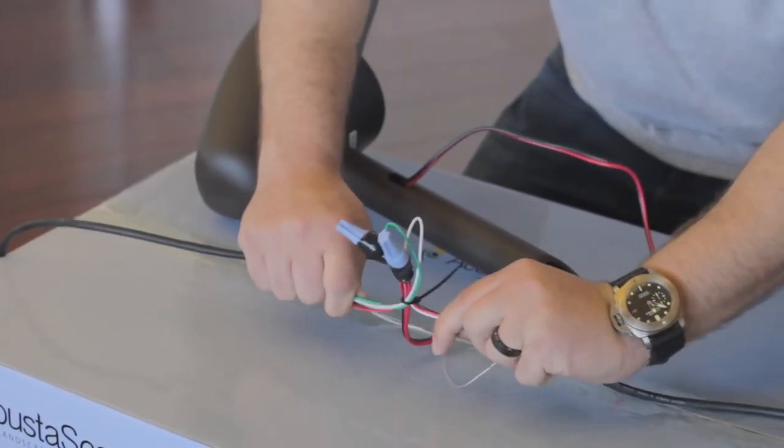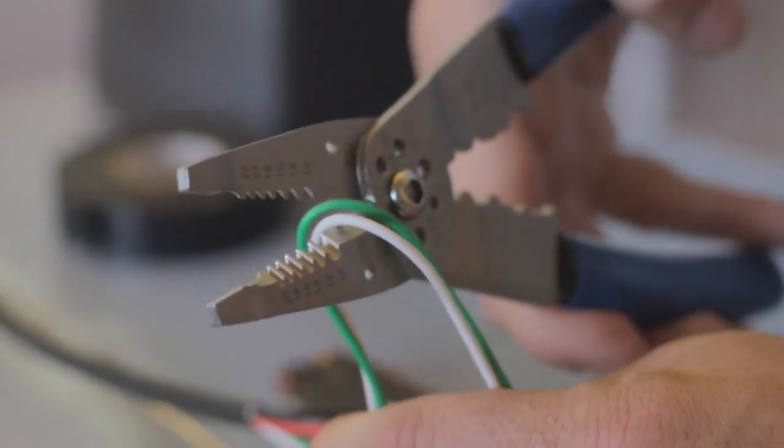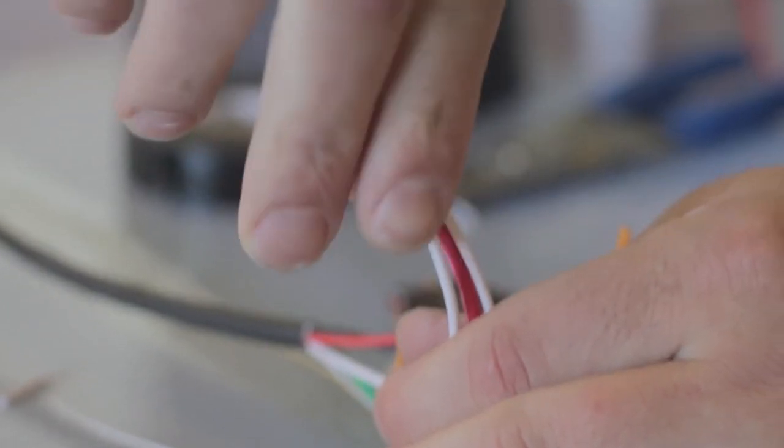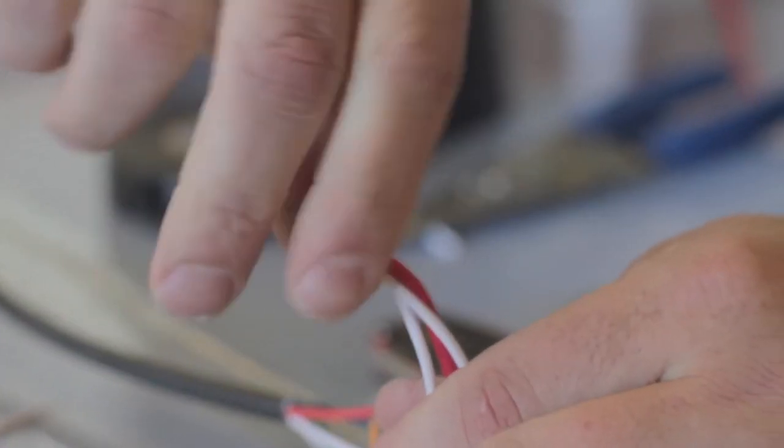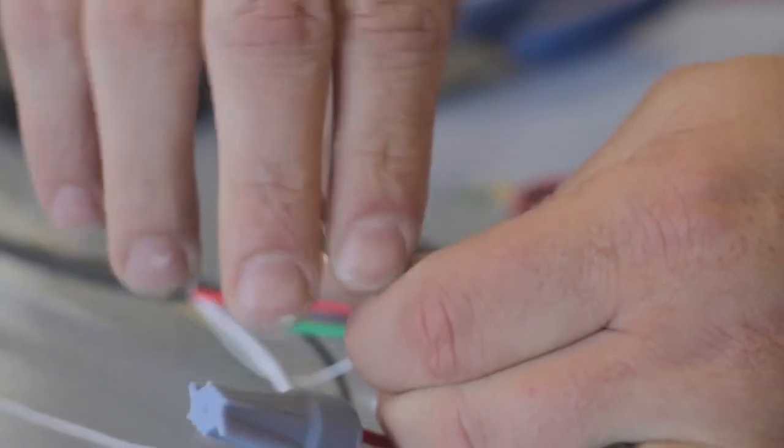Repeat these steps for the left channel. Remember, white is positive and will be connected to the red wire on the end of the speaker. The green wire is negative, so it will be connected to the black negative wire at the end of the speaker.